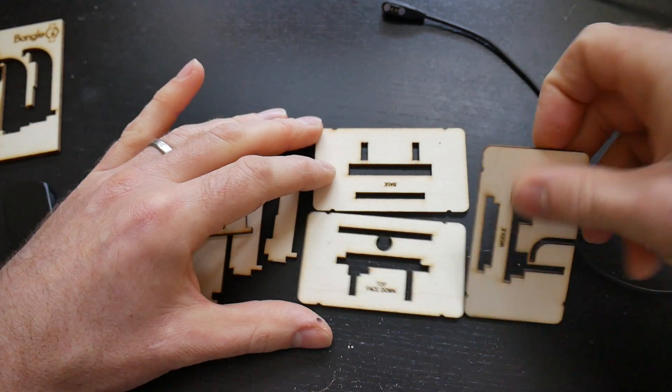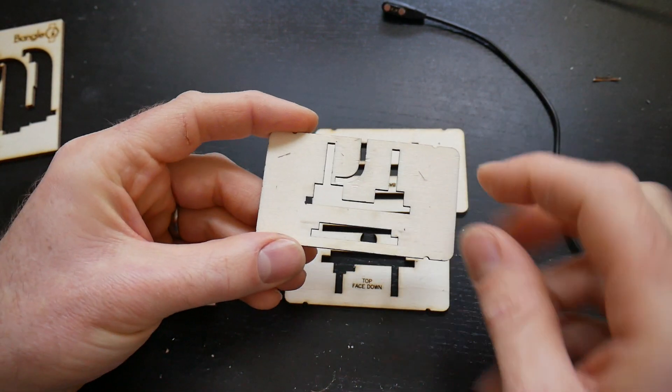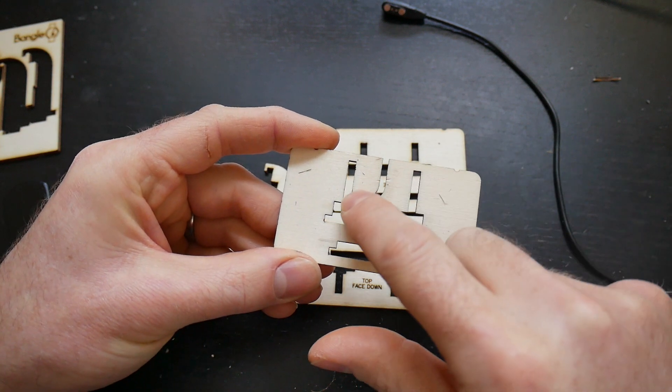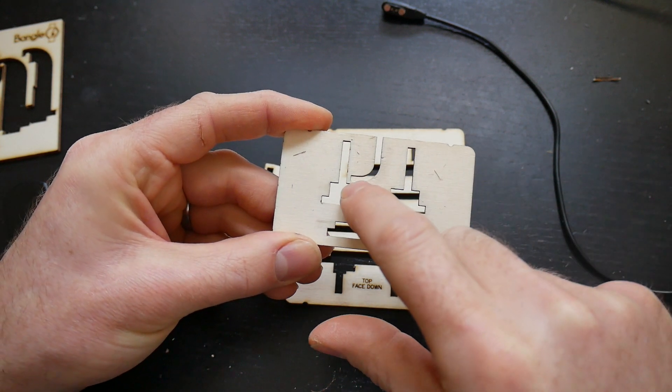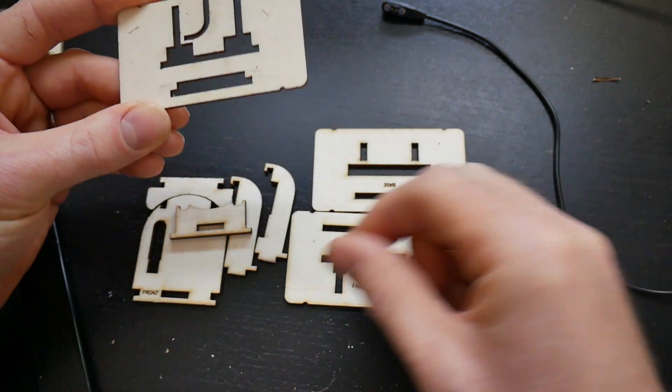Then we need to assemble onto the middle section here. So flip it over so you can't see the text and so that you've got this little slot for the cable over to the left hand side.